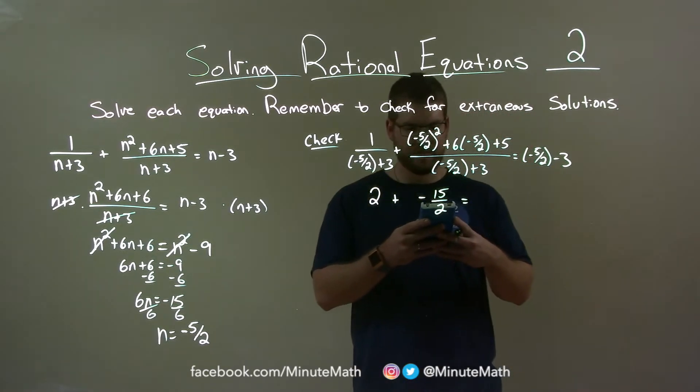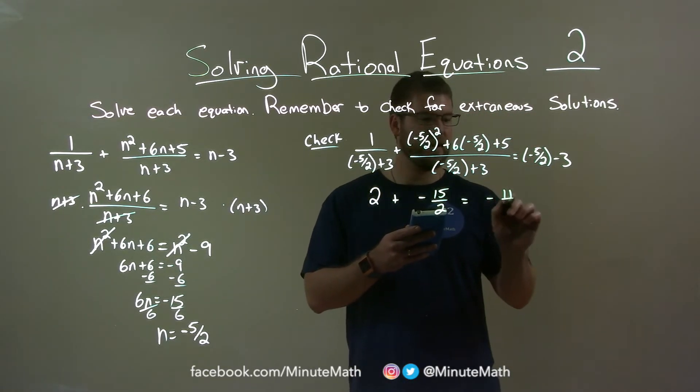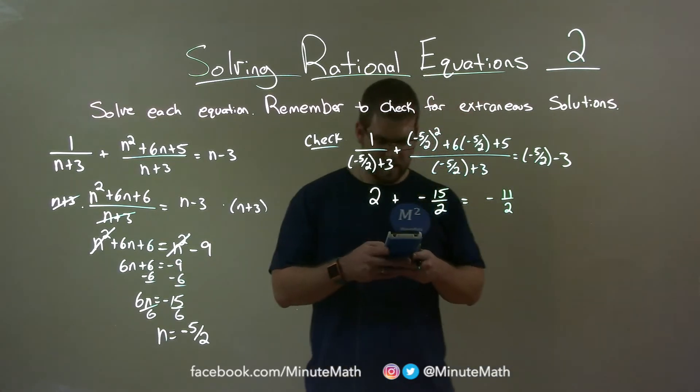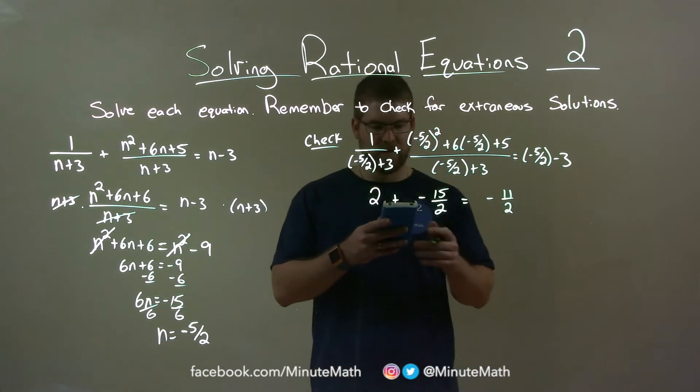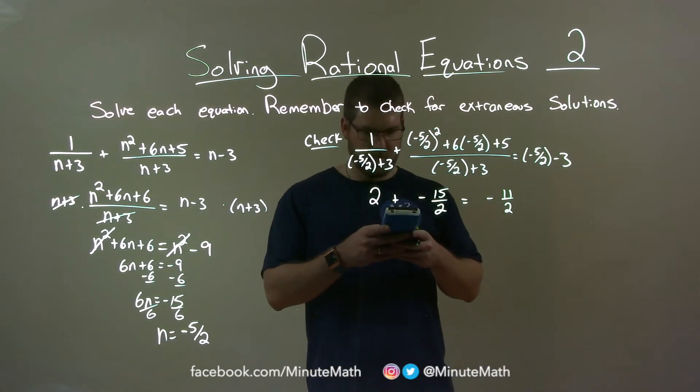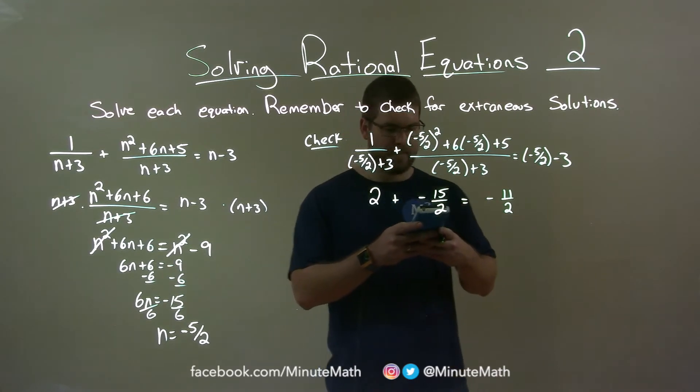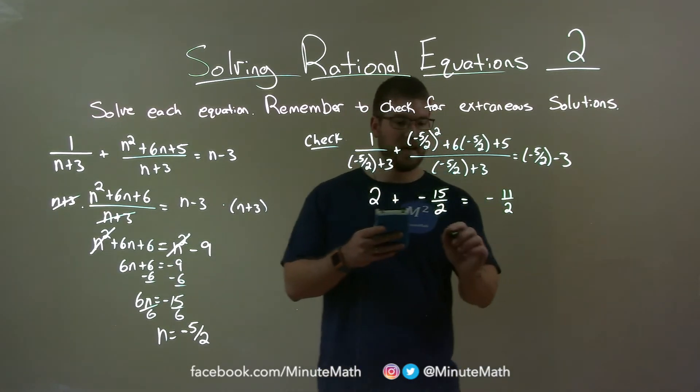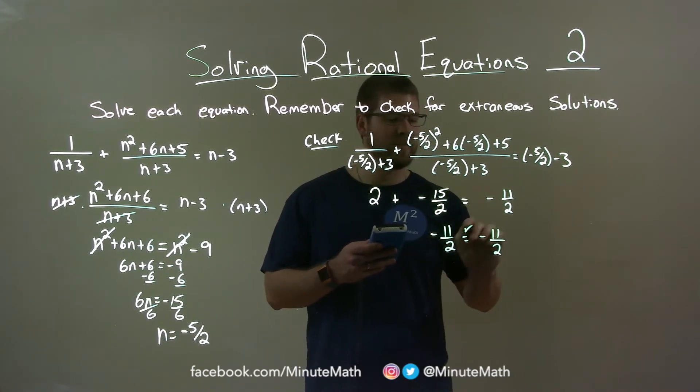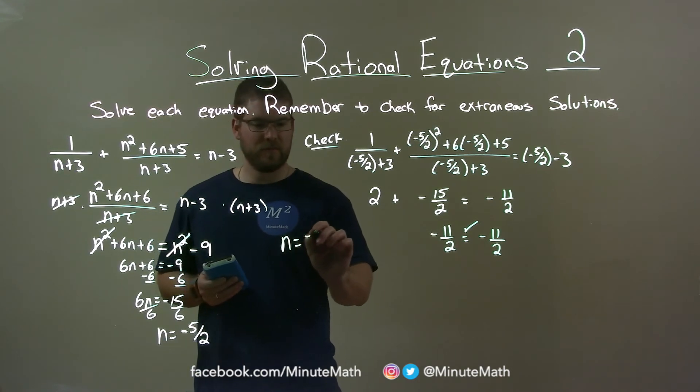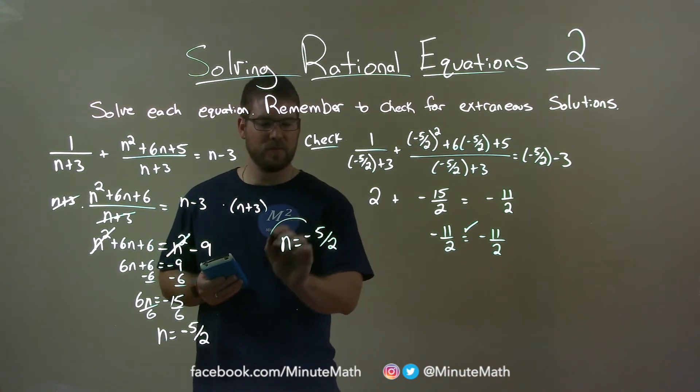So, 2 plus negative 15 halves is negative 11 halves. So, our left and right hand side are equal, meaning that our answer of negative 5 halves is a true solution, and so there is our final answer.